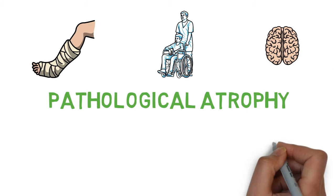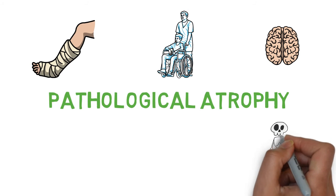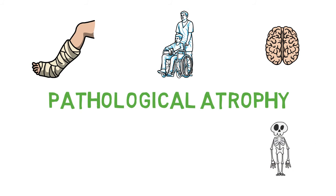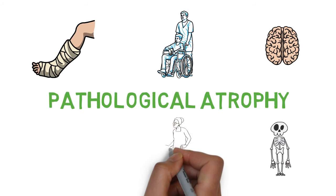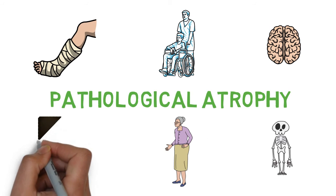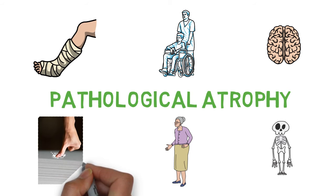Atrophy due to inadequate nutrition, for example cachexia in cancer patients. Atrophy due to loss of endocrine stimulation, for example atrophic endometrium after menopause. There is pressure atrophy also of the tissue surrounding a benign mass.